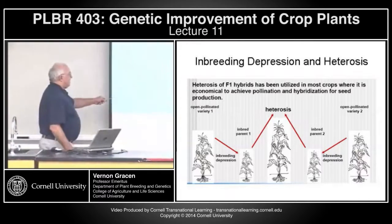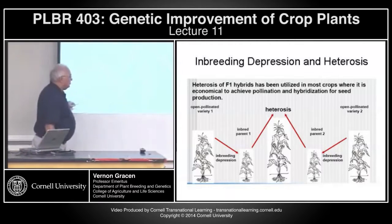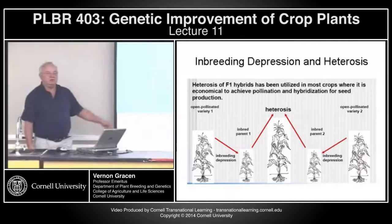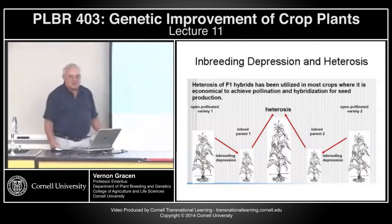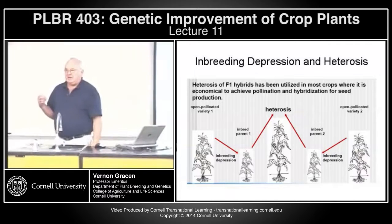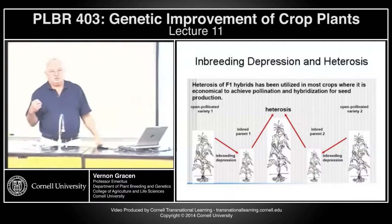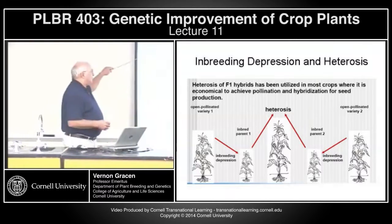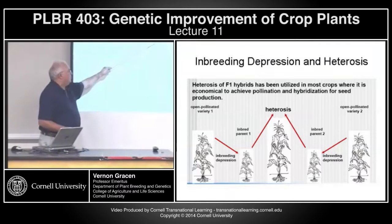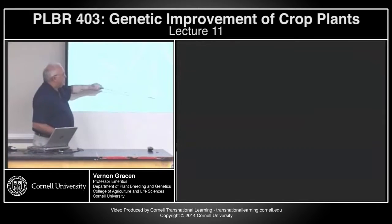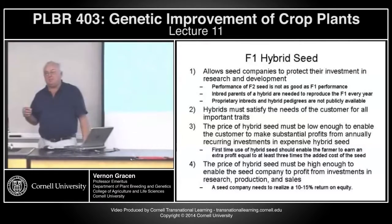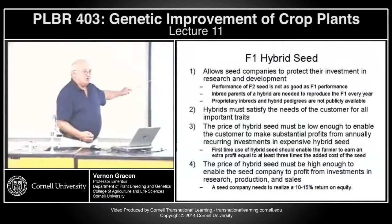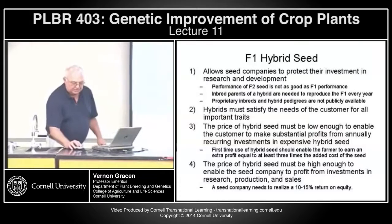And if you can find a way to cross two different inbred parents year after year, you can always produce the same genetic complement in the hybrid. It sounds like a lot of work and expense, but the heterosis you can develop more than compensates for the extra work and expense of developing those inbreds and hybrids.